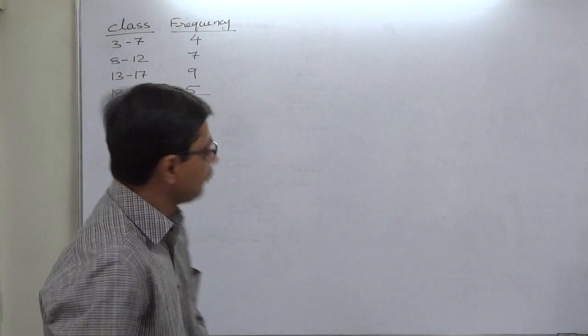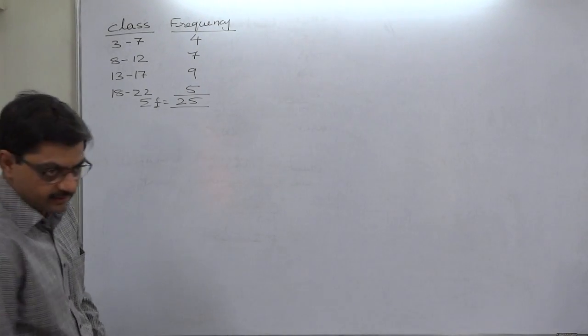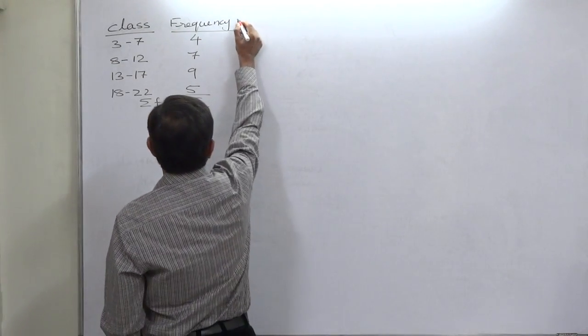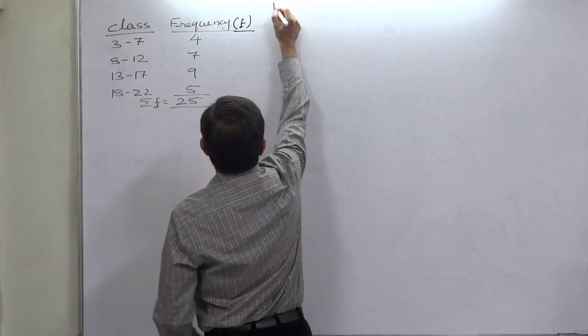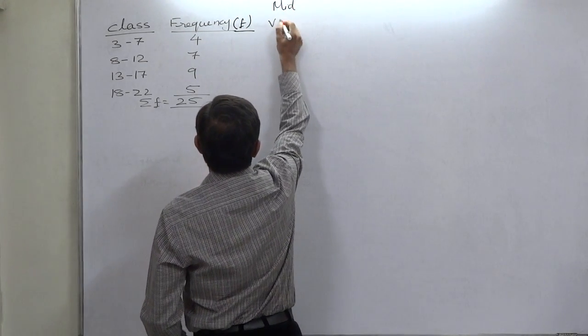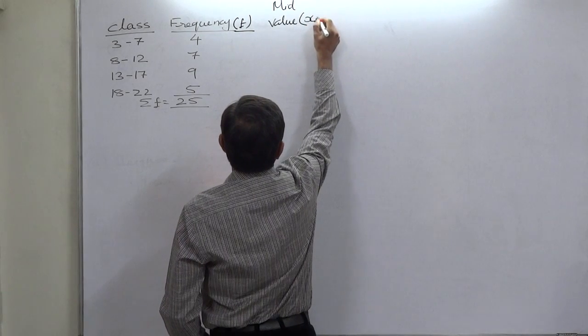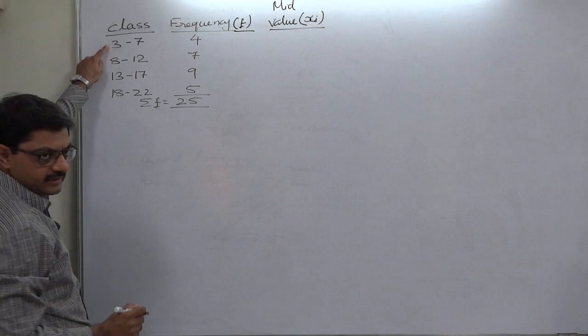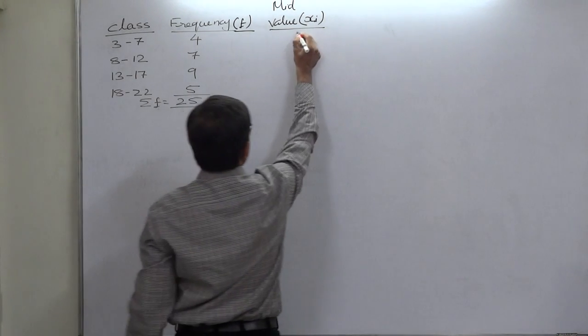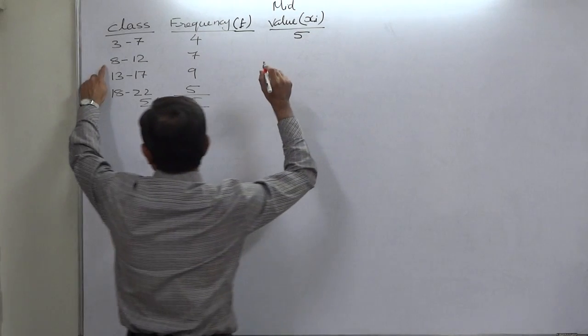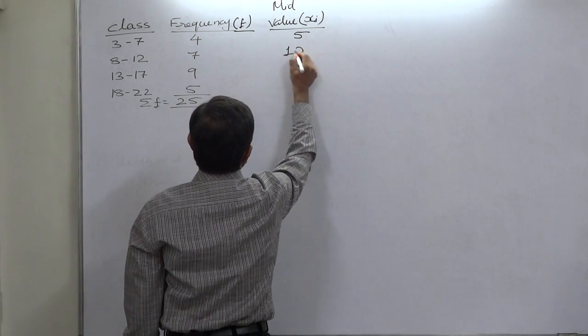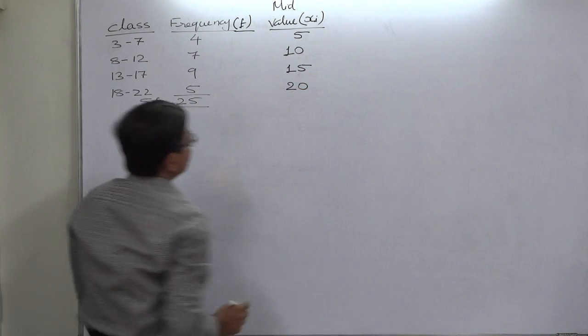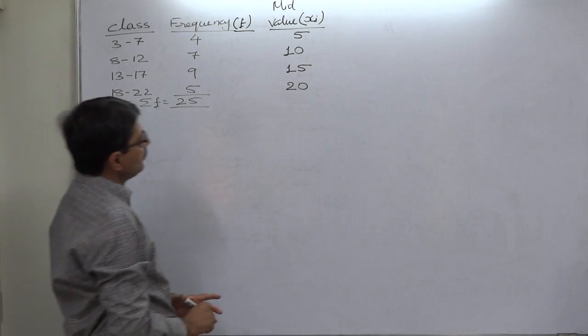In this case we are going to calculate mean, variance, and standard deviation. Now we know that to calculate mean, first of all we have to take the midpoints or midvalues, known as x. The midpoint of the class 3 to 7 is 5, that of 8 to 12 is 10, similarly 15 and 20.